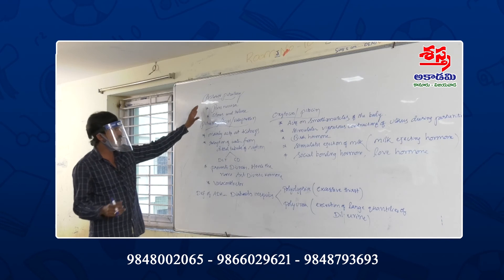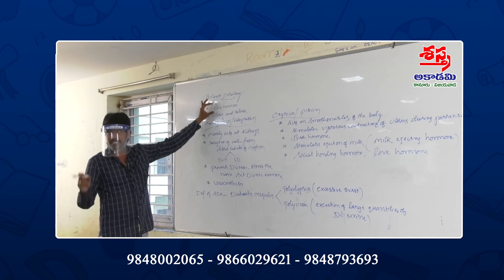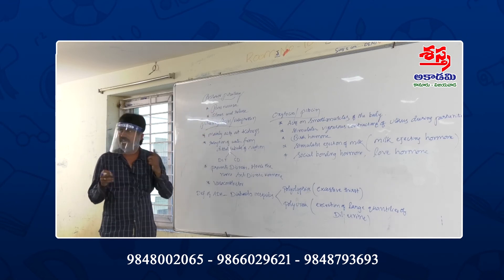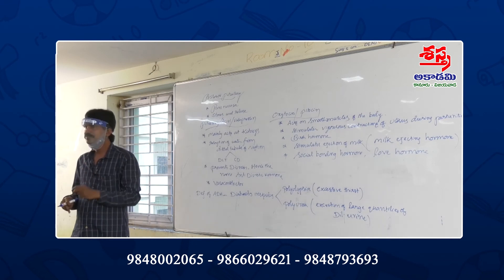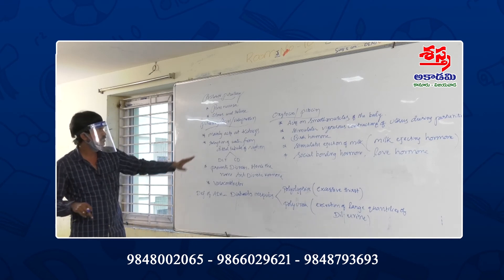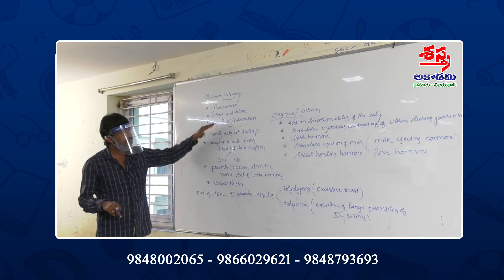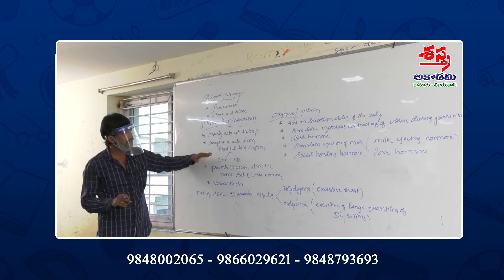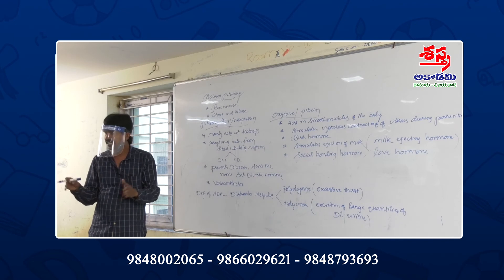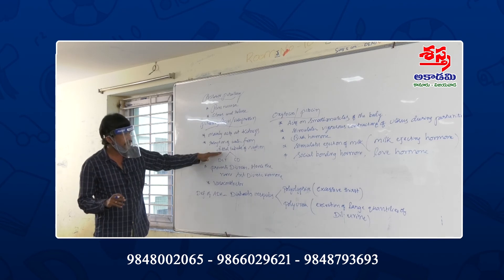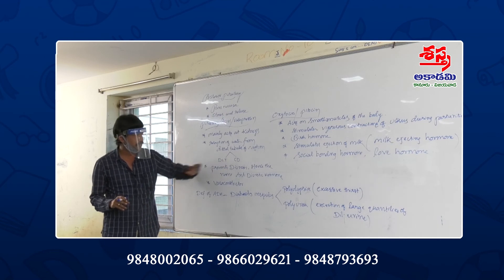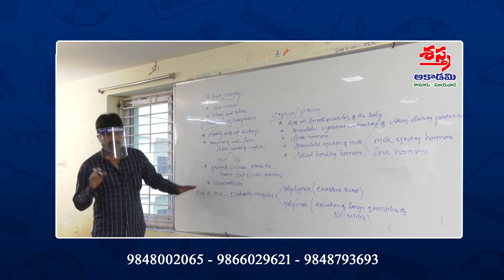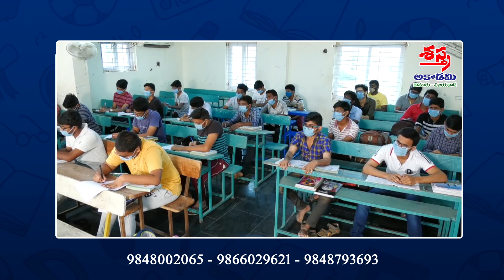In summary, the posterior pituitary, also known as pars nervosa, stores and releases ADH and oxytocin, though both hormones are actually synthesized in the hypothalamus. ADH, also known as pitressin or vasopressin, acts at the kidneys to promote resorption of water and electrolytes from the distal tubules of the nephron like DCT and CD, prevents diuresis, hence the name anti-diuretic hormone, and acts as a vasoconstrictor.